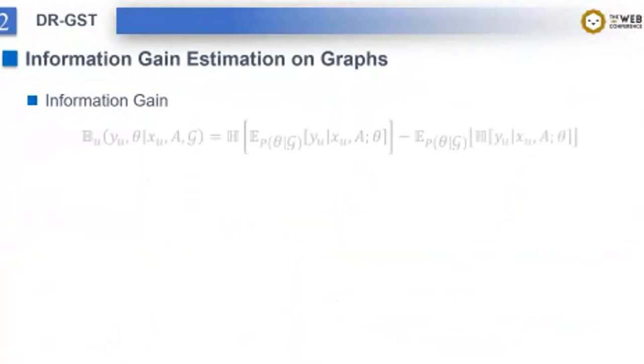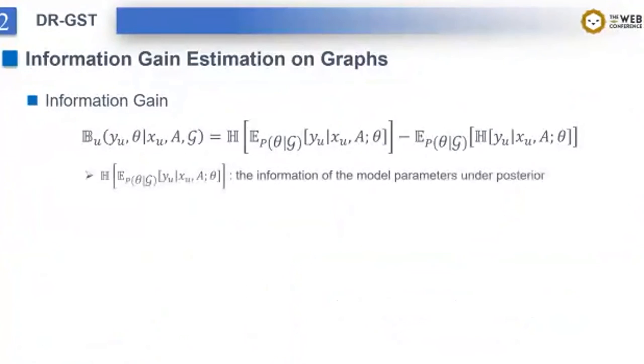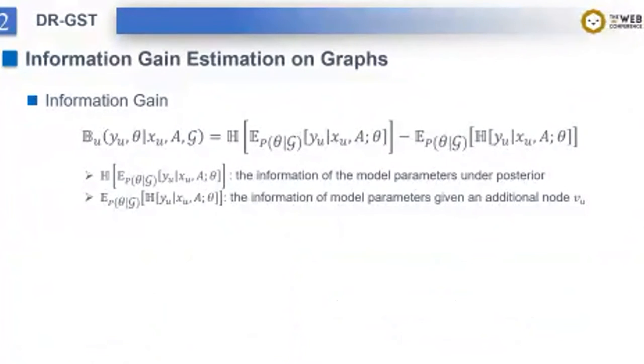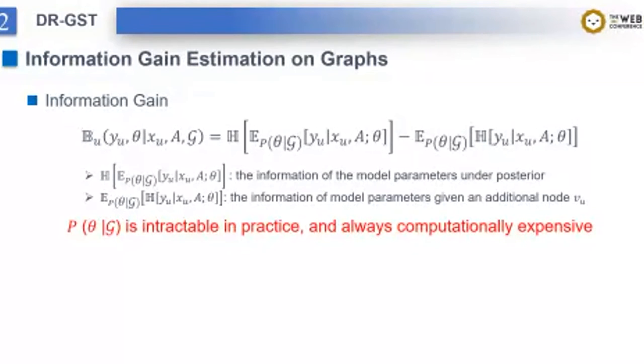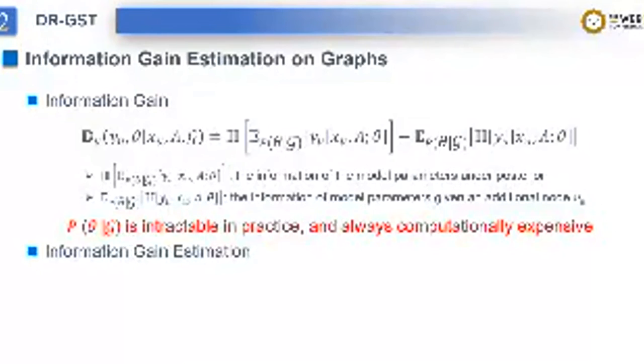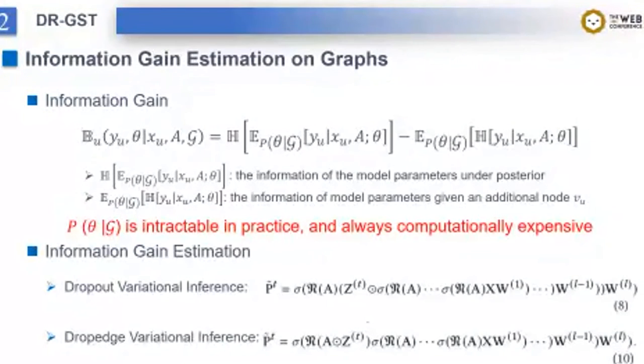In fact, the information gain can be written as a difference between two terms. The first term could represent the information of the model parameters and the posterior. And the second term is the information of model parameters given an additional node v_u. So, by means of the difference, we could know the additional information brought by node v_u. However, as consensus, the posterior probability P(θ|G) is intractable in practice and always computationally expensive. The common practice is to estimate using dropout variational inference. Due to our focus on graphs, we extend to dropedge variational inference based on our previous study.